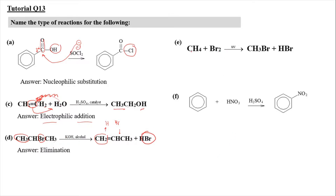For part E, we have an alkane with bromine molecule applied under UV. When UV is applied, one of the H atoms is substituted with Br. So from CH₄ it becomes CH₃Br. This is a substitution reaction, and because it is under UV, free radicals are produced. So it is a free radical substitution.